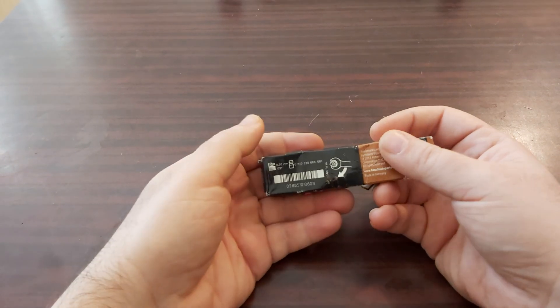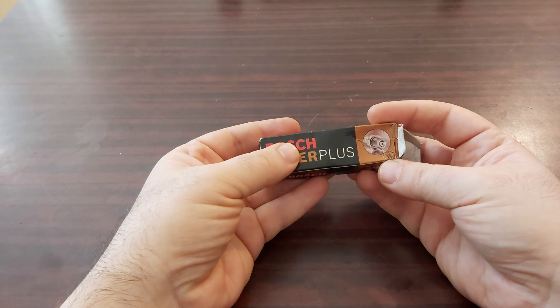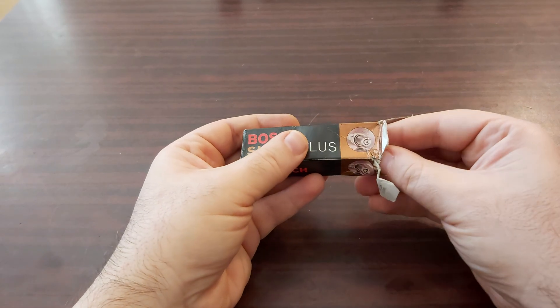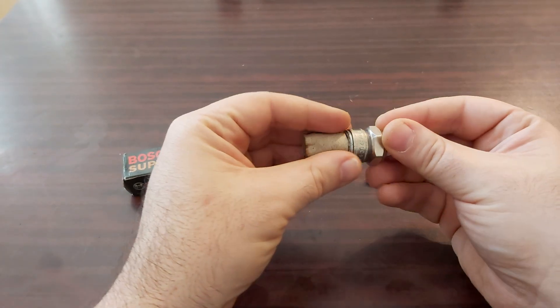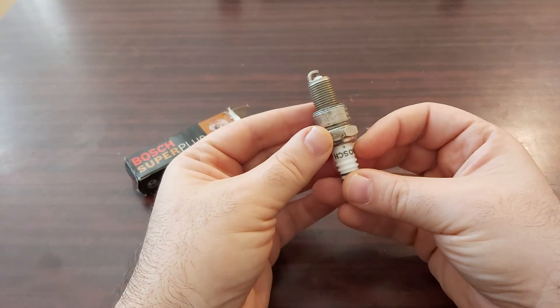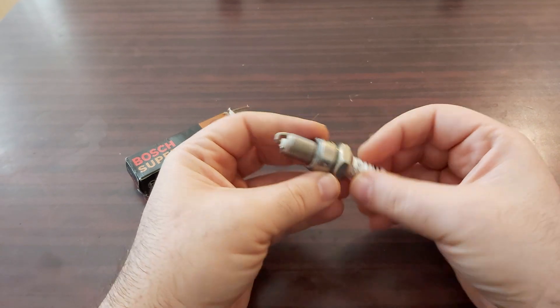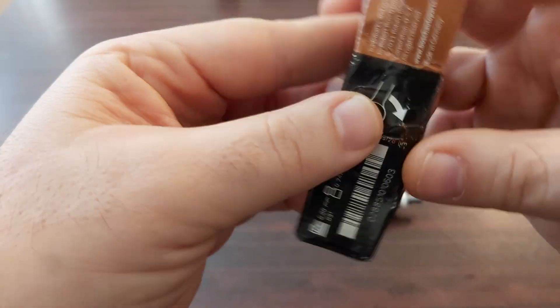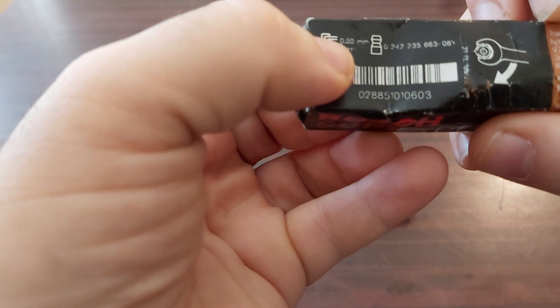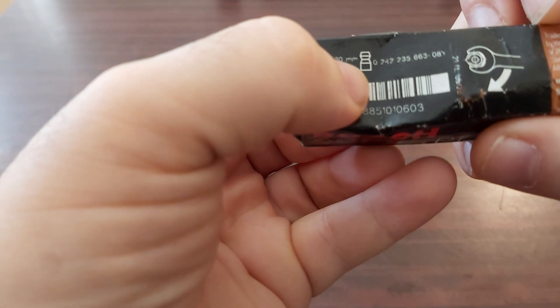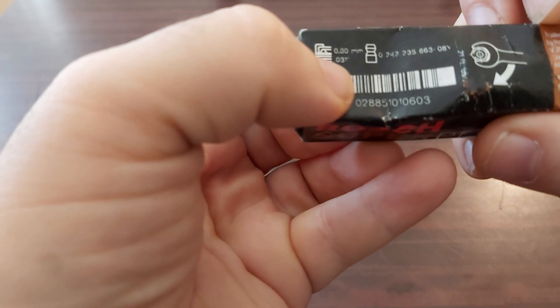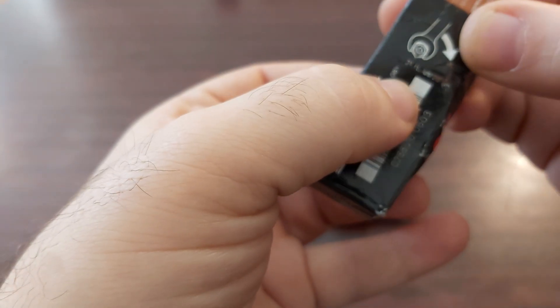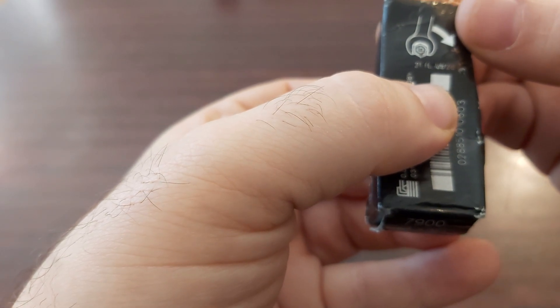Let me show you. These are the spark plugs for R107. You can find many information on the spark plug. Here this is the gap - it's 0.8 mils, and that's 0.031 inches.